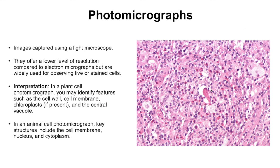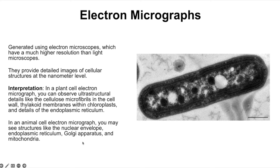Photomicrographs are images captured by a light microscope, offering lower resolution since image formation uses light with a longer wavelength. In plant cells you can identify the cell membrane, chloroplasts and vacuole; in animal cells you can see the cell membrane, nucleus and cytoplasm. To see smaller organelles and the internal structures of organelles, you need an electron micrograph — an image created by an electron microscope — which, due to its higher resolution, reveals those additional structures.